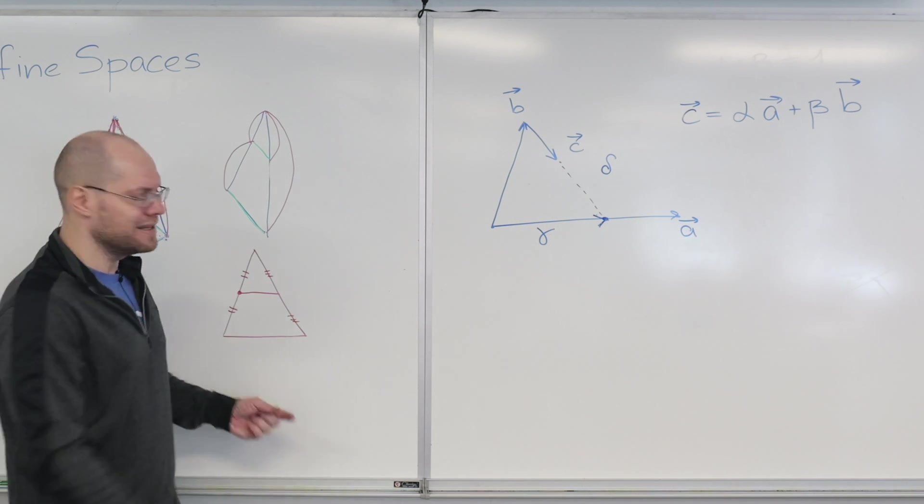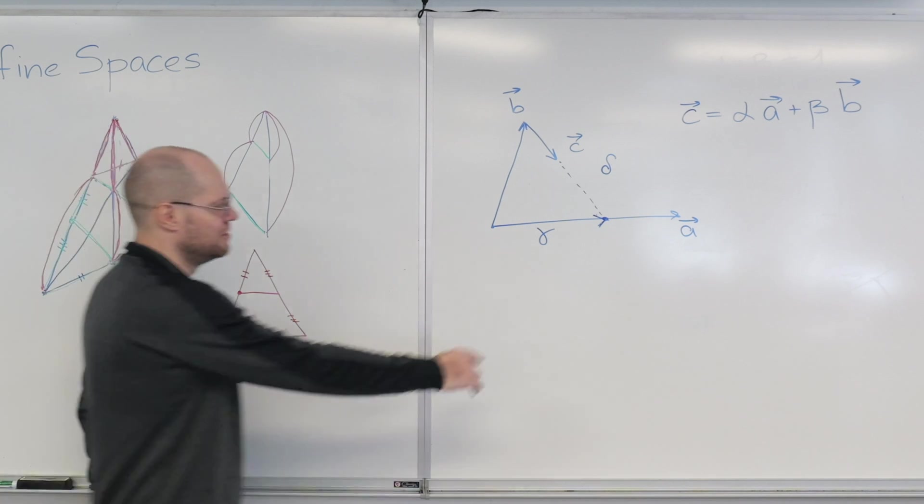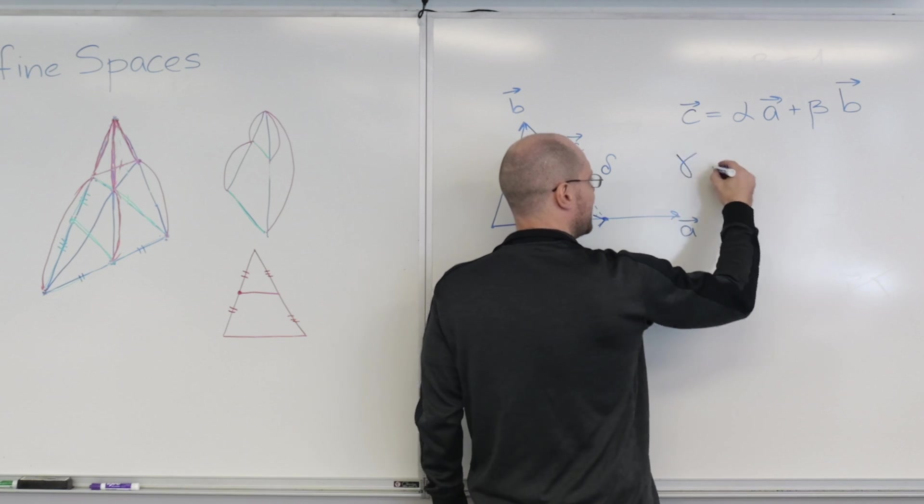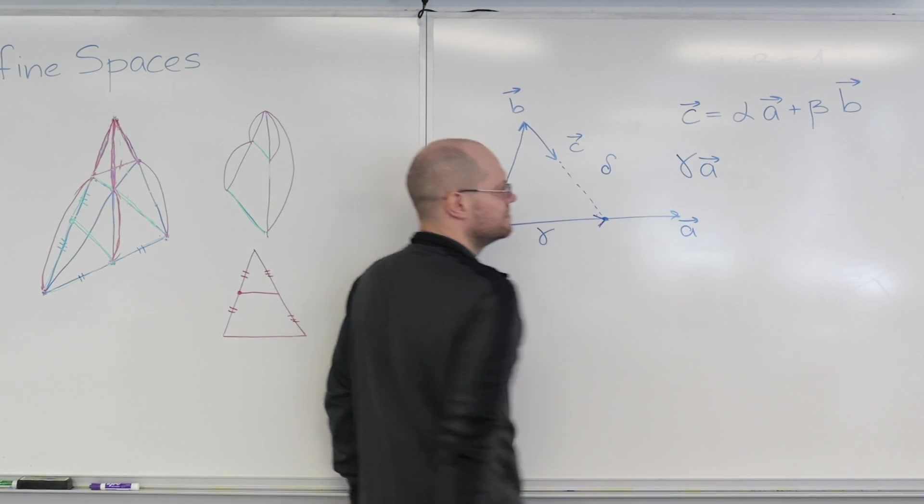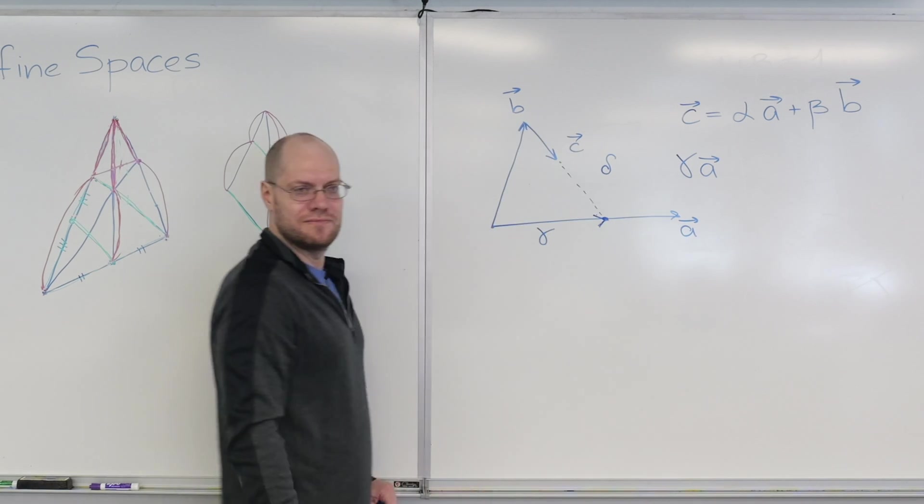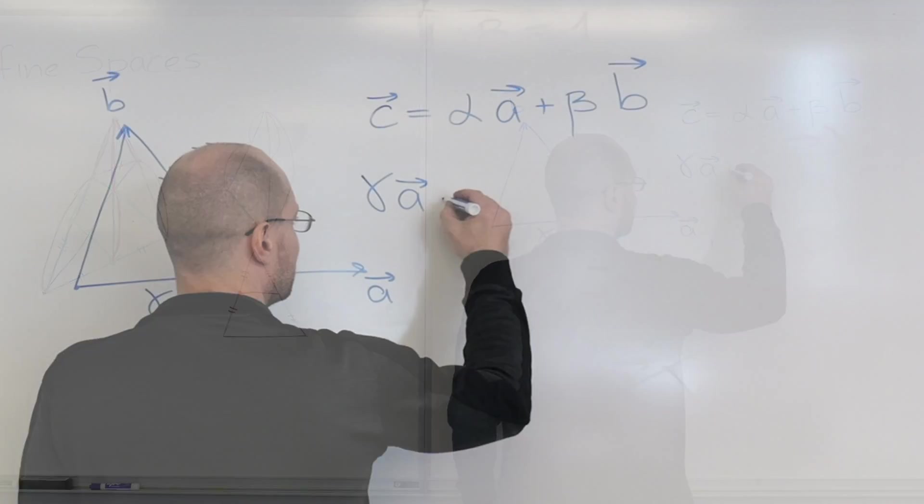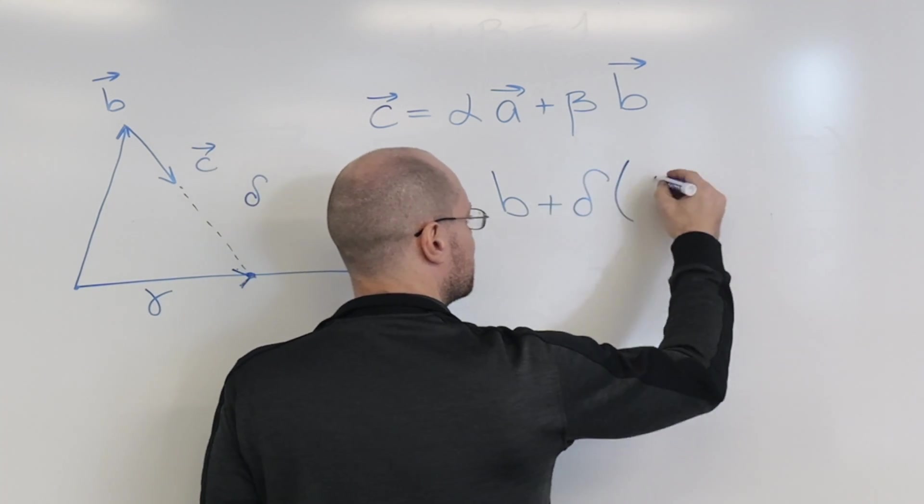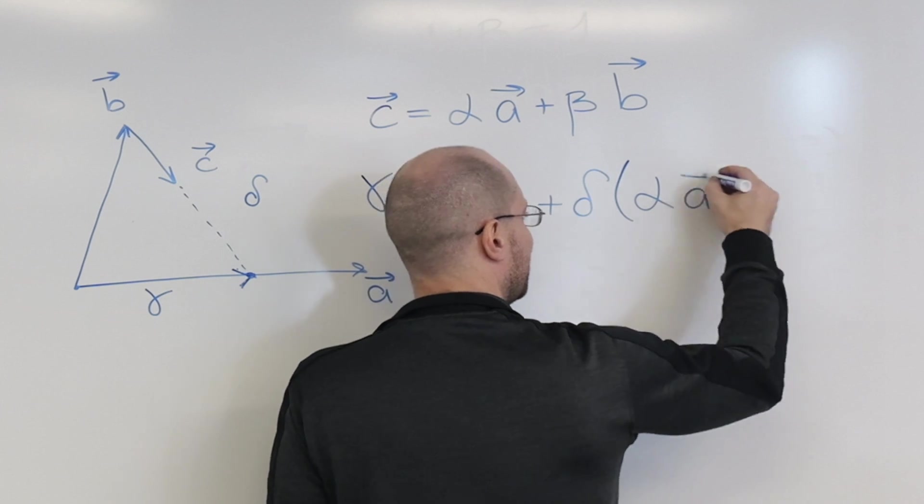And I think it's clear, given the previous example, exactly what we'll do. We can get to this point in these two ways. On the one hand, it's gamma A. On the other hand, it's B plus delta C. Right, so it's equals B plus delta C. And C we've already expressed in terms of A and B.